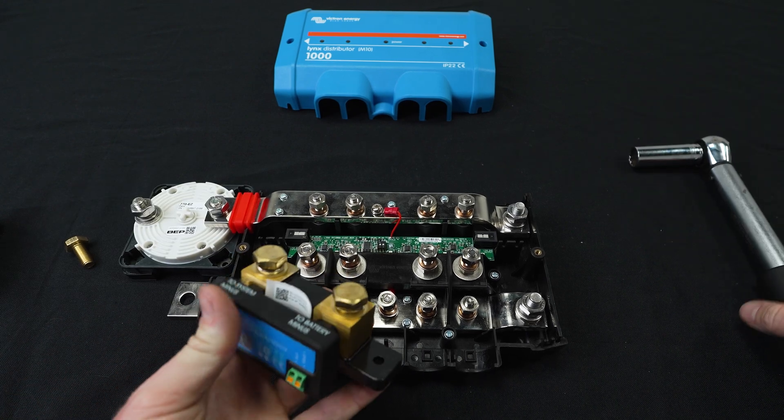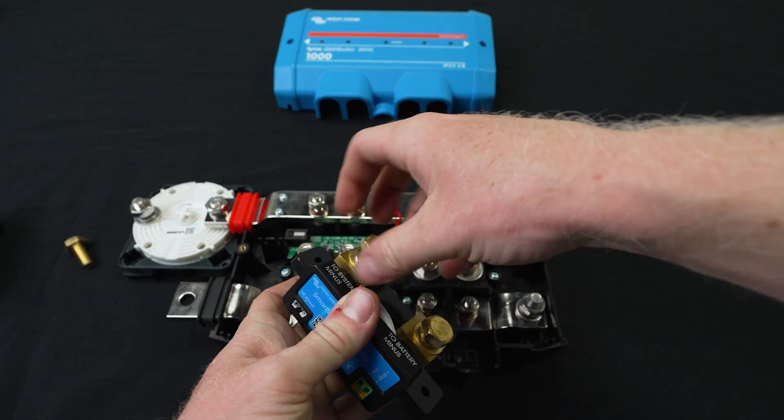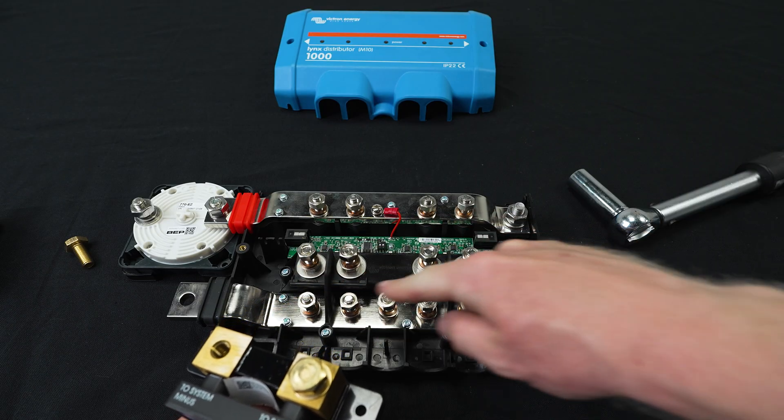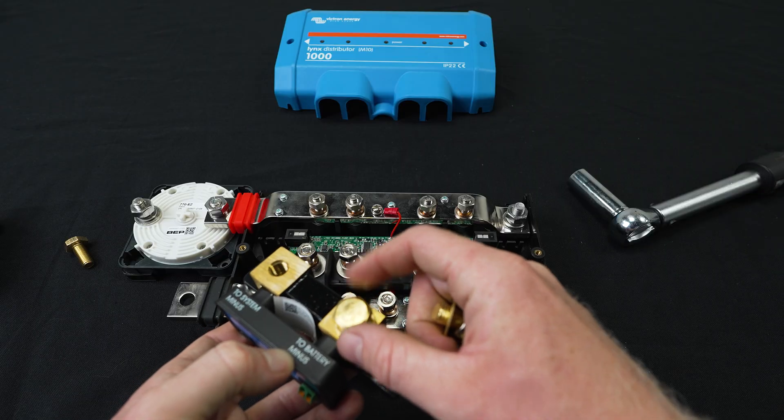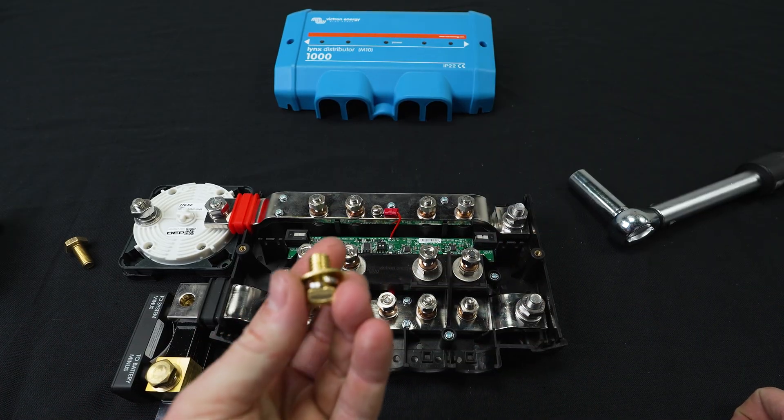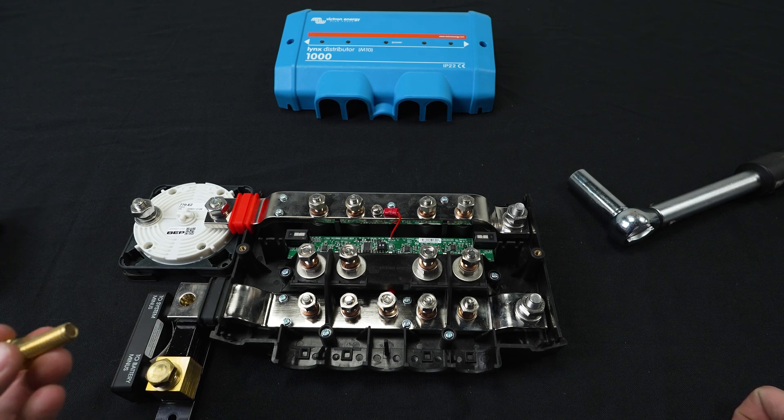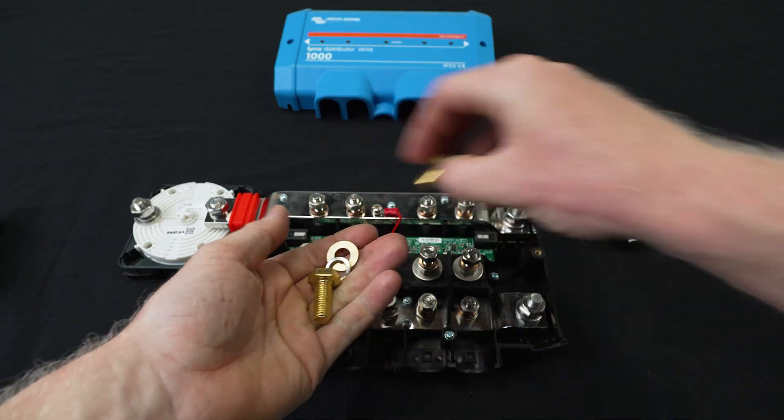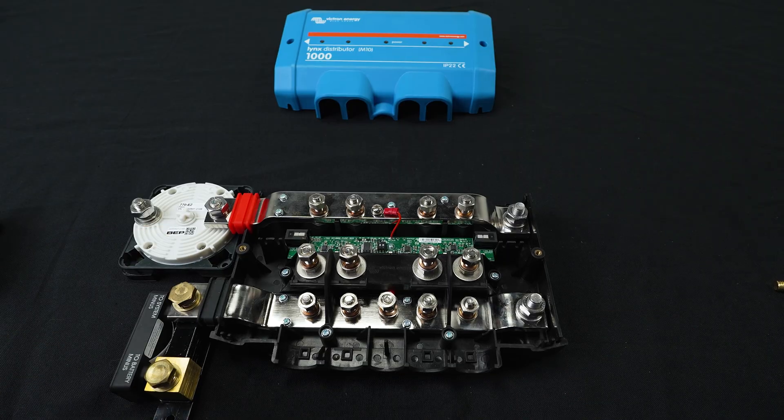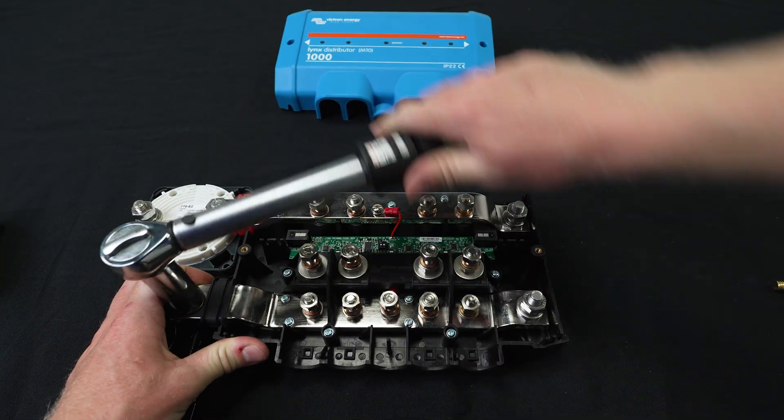And then for the smart shunt, again, it's the same 17 millimeter socket. Now you'll notice two system minus and two battery minus. This is your system minus. Your battery minus is going to come from the battery negative directly to here. So we're going to install it in that direction. And the bolt that comes with the smart shunt is a bit too short. Won't thread in there if you have the washer and the lock washer on. So we're going to use the bolt that comes with our clean install kit.